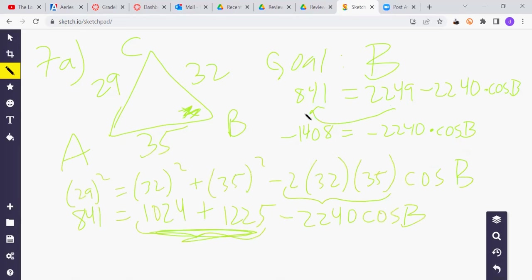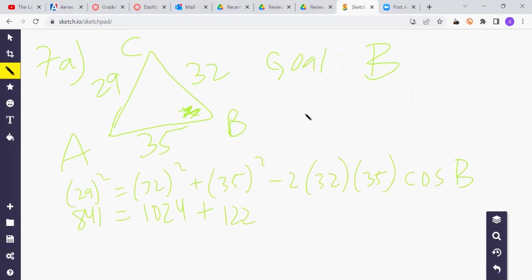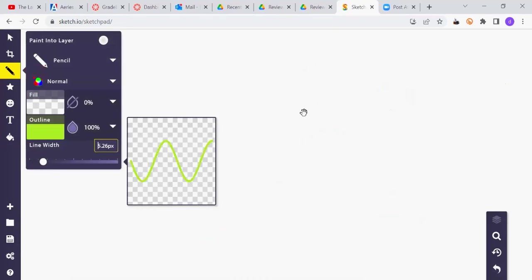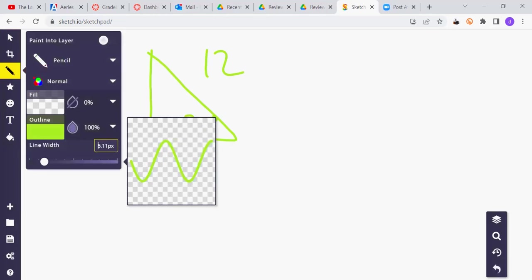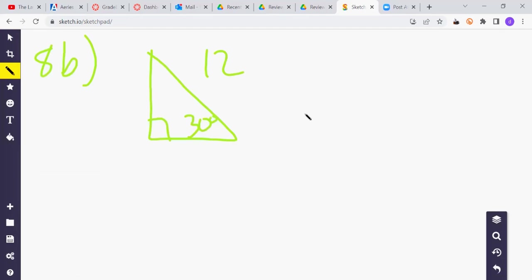Now, let's look at number 8, part B. So let's move on to 8B. And for that one, we have a right triangle. Check it out like that. We got 12 and we got 30 degrees. Let me make the pencil a little less broad. There we go. A little better.